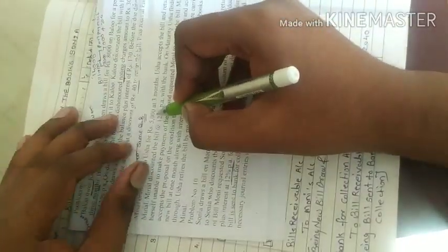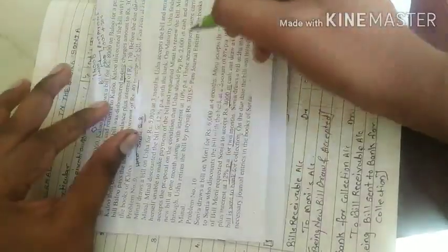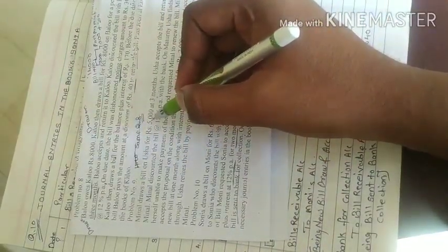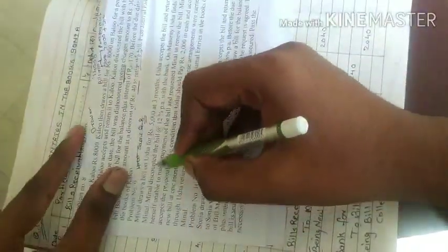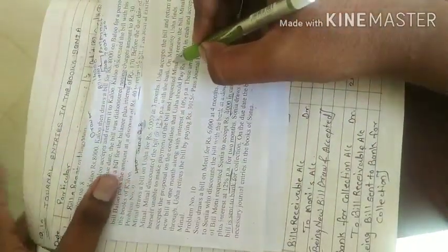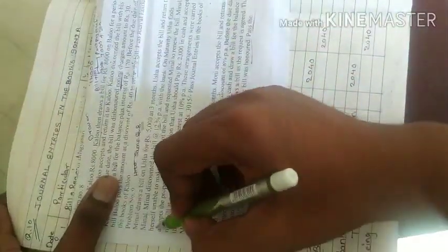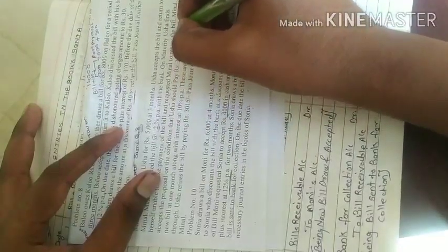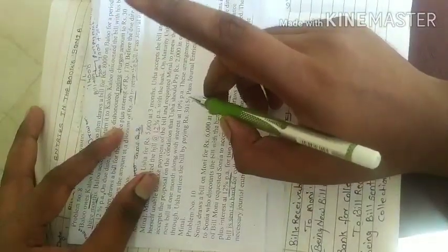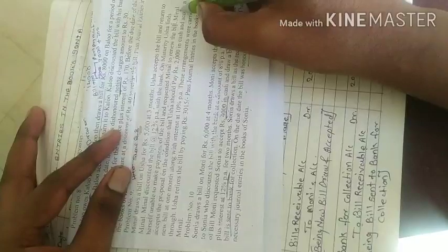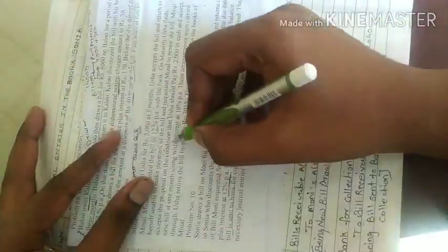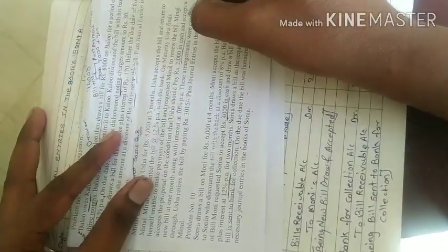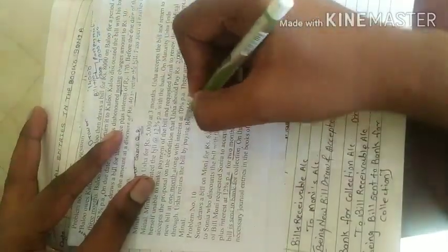Minell draw a bill on Usha, 5,000 at 3 months. Minell drawer means you have to have the necessary entries in the books of Minell. It means drawer in the books of Minell, bill accepted, drawn and accepted. Cancels and request Minell to renew it the bill. So renew, first I have to do the bill cancels. After what conditions you have to do, Minell accept the proposal on the condition that Usha should pay 2,000 in cash, 2,000 part payment.